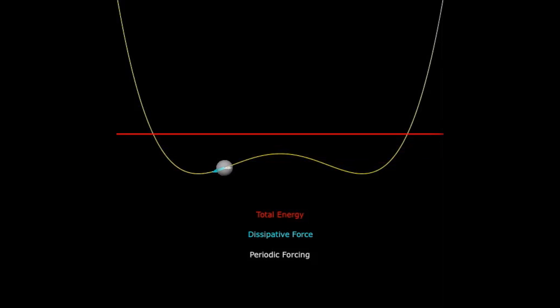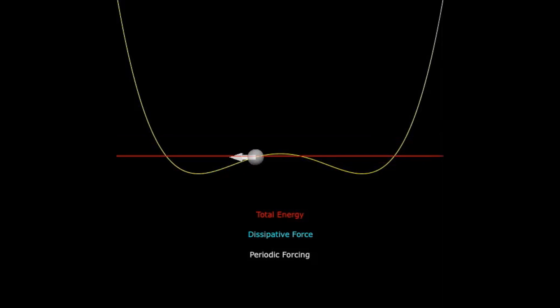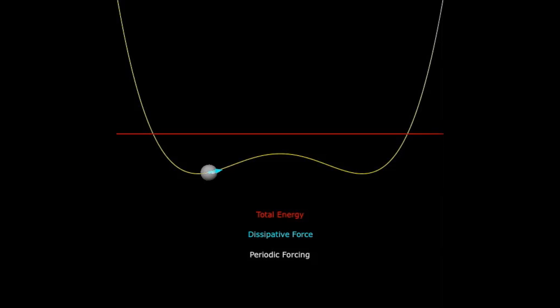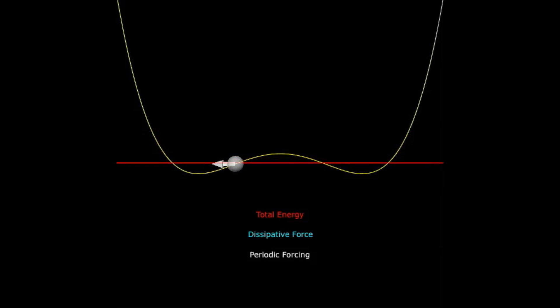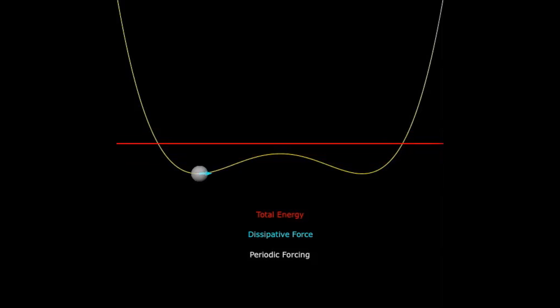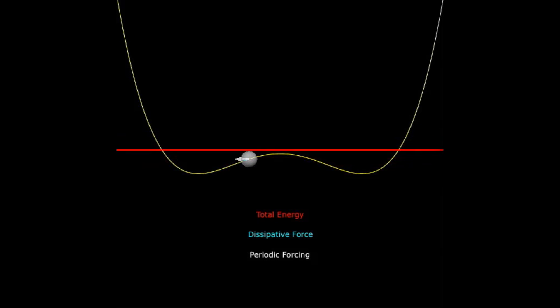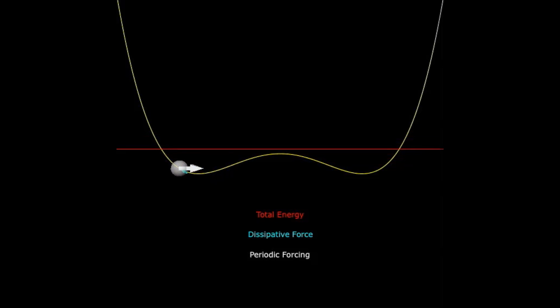If we were to continue to vary this parameter, we would experience a period doubling cascade until eventually the parameter reached a critical point at which the particle showed no signs of periodic motion — also known as chaos.